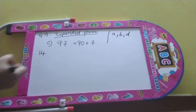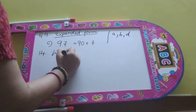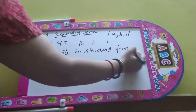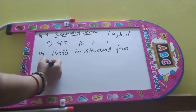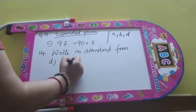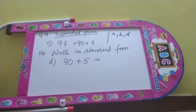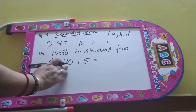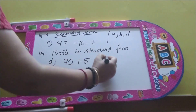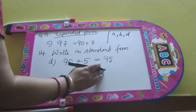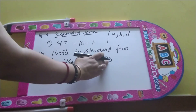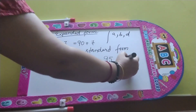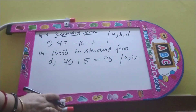Now question number 14. Question B is 90 + 5. Now, standard form — we have done expanded form, and from expanded form we have to get the standard form. Standard form here is 95. So 90 + 5 is 95. 10's place: 9. And 1's place: 5. So our answer is correct. Questions A, B, and C you will be doing in your textbook by yourself.